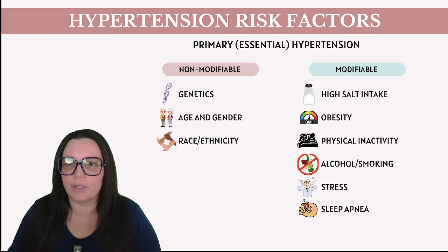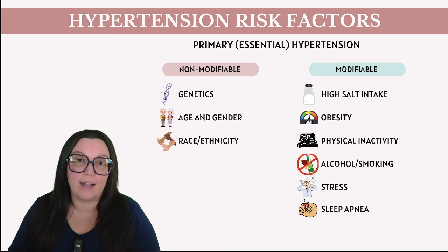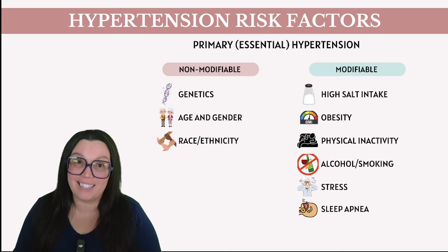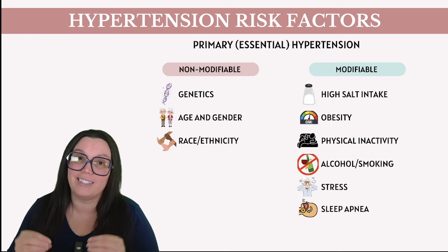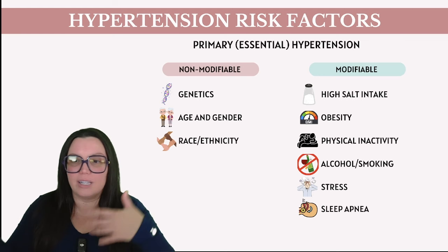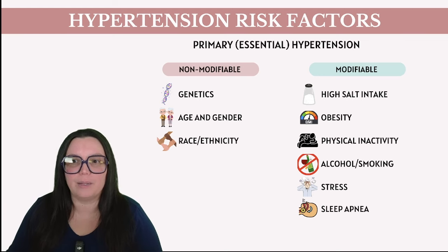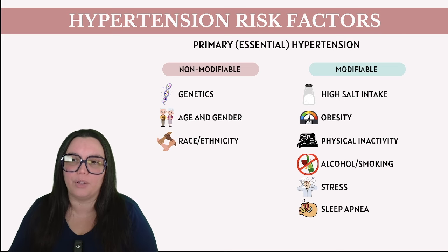Next we have obesity. Excessive fat increases the workload on our heart, making it have to pump stronger. Obesity is also one of the leading causes of insulin resistance, which can increase blood pressure by impairing the body's ability to use insulin effectively, leading to higher circulating blood glucose and insulin levels. Additionally, inflammation can occur specifically with obesity and increase the stiffness of our blood vessels, contributing to hypertension as well.